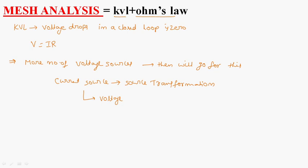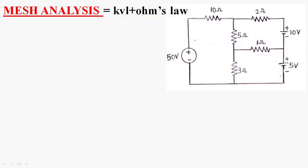You will come to understand Mesh Analysis by solving a network. Let us consider this network — here there are three voltage sources: 50 volts, 10 volts, and 5 volts. Let us consider I1 is the current flowing through the first loop, I2 through the second loop, and I3 through the third loop.